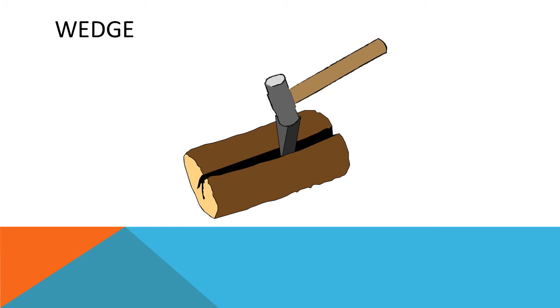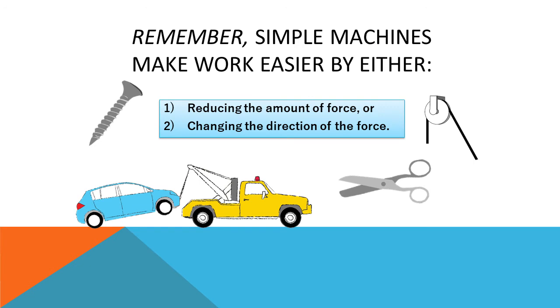If you drive a wedge into a log, the downward force applied to the back of the wedge pushes outward and the log splits apart. The simple machine changes the direction of the force. Remember, simple machines make work easier by either reducing the amount of force needed or changing the direction of the force that is applied.